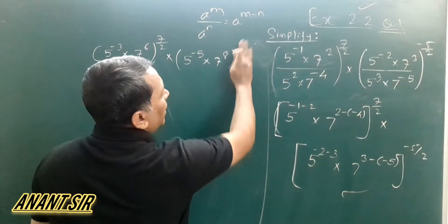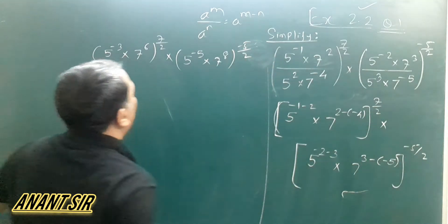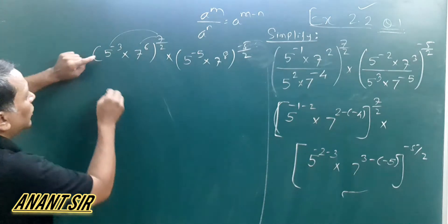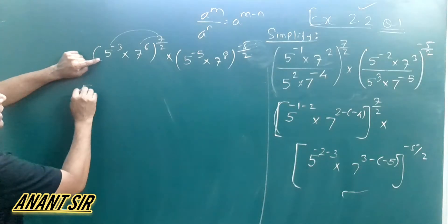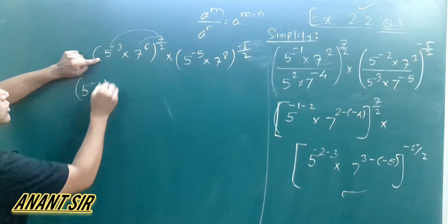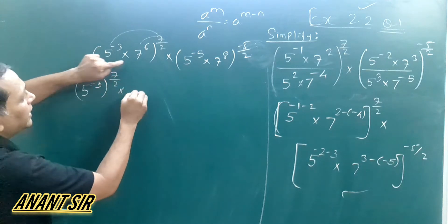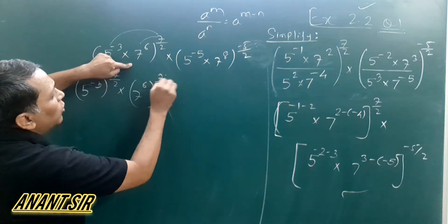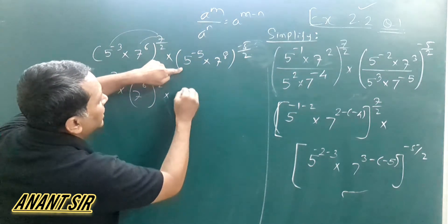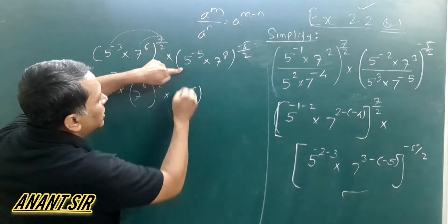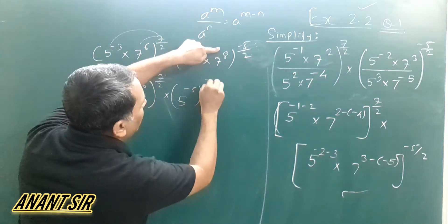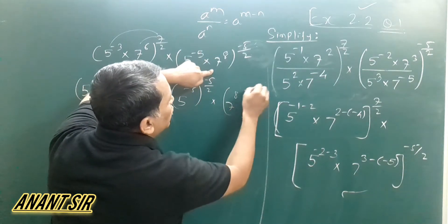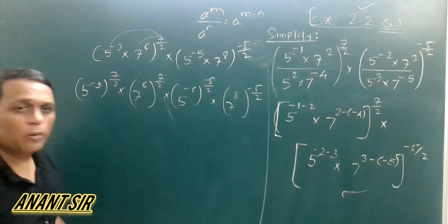So this is the right thing to be solved. Now this power applies to all. We will apply the power. So this is 5 raised to power minus 3, raised to power 7 by 2. So this is 7 raised to power 6, raised to power 7 by 2. So this is 5 raised to power minus 5 by 2. So this is 7 raised to power minus 5 by 2.